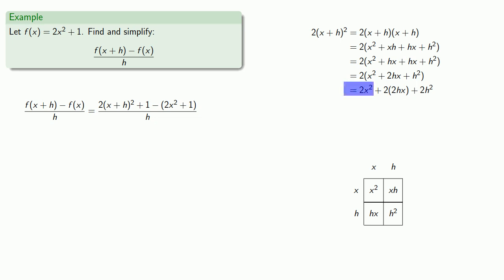2x², well, there's not a whole lot we can do with that, so we'll just copy it down. 2 times 2hx. We can multiply these two factors of 2 together to get 4hx.